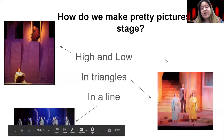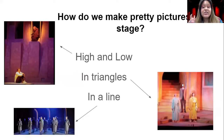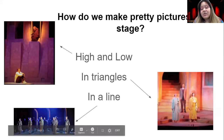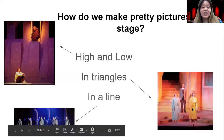Another way that we make pictures look pretty on stage is to make triangles. The same way that a triangle has three sides or three corners, we use triangles with three people. You can kind of see how these three people together make a triangle shape on stage.